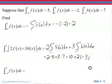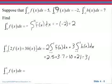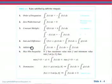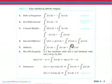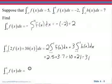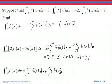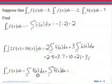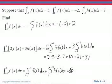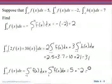Now look at the last example. We're going to go from negative one to four. We have the integral from negative one to one and the integral from one to four. The additivity rule says the integral from a to b plus the integral from b to c is the same as the integral from a to c. So this is the same as the integral from negative one to one of f of x dx plus the integral from one to four of f of x dx. The first area is five and the second area is negative two. Five plus negative two gives us three.